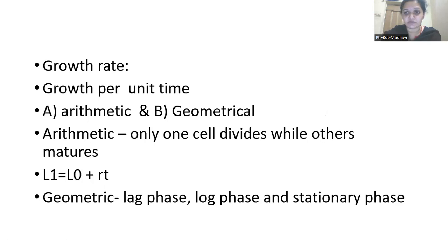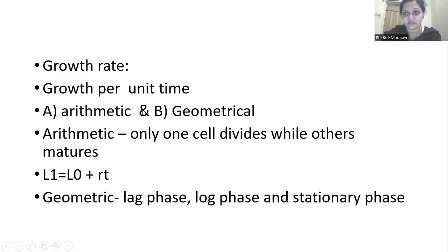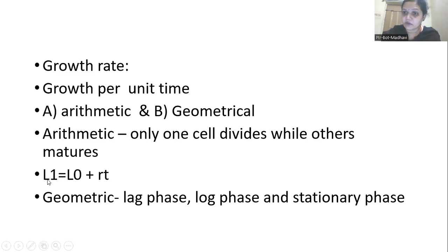The growth rate can be measured as growth in a specific time period per unit time. This can be measured with arithmetic and geometrical methods. Arithmetic growth means only one cell keeps dividing to produce many cells while other cells lose the capacity to divide. The formula is: L1 = L0 + r·t, where L1 is the final length after growth, L0 is the initial length, r is the rate of growth, and t is the time period.